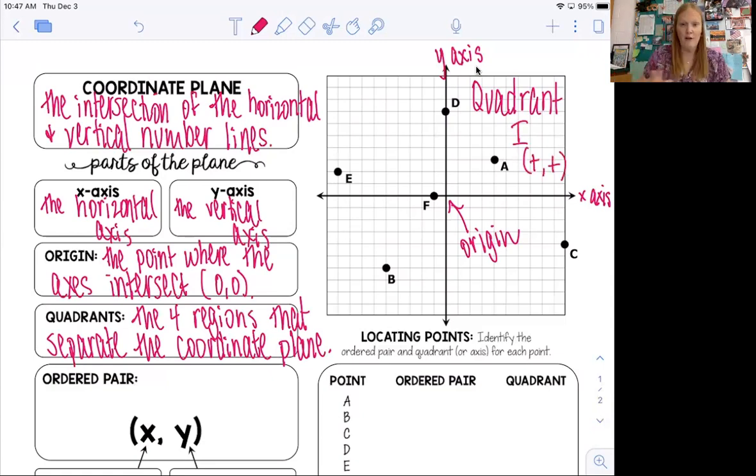Now it goes counterclockwise, so to the left we have quadrant two, and again we use Roman numerals, and the way we show two is like two capital I's. Now what would the signs be of a point in quadrant two? I go to the left and then I go up. That's going to give me a negative comma a positive, and for some reason that always looks to me like an owl is like blinking its eye. That's what it reminds me of.